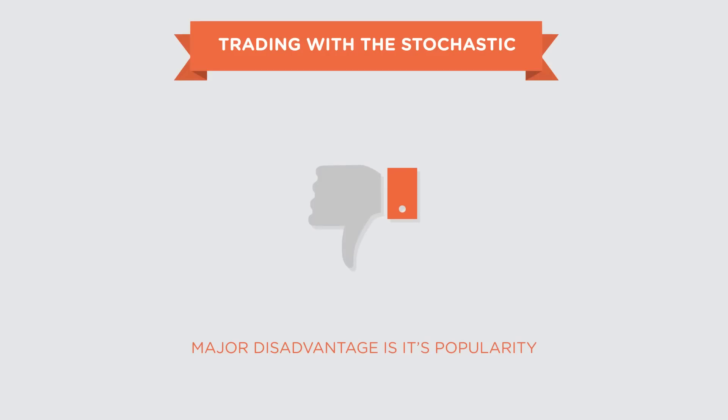Trading with the stochastic has one major disadvantage — its popularity. A major drawback of popular indicators is that too many people trade them and they eventually lose their edge. This is true for the stochastic as well. People will usually employ their own tweaks to make the probability of winning higher, and you may have to do the same.